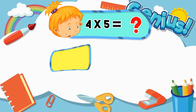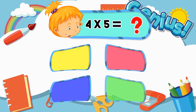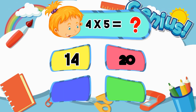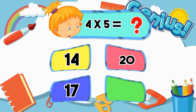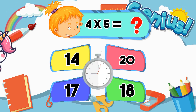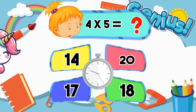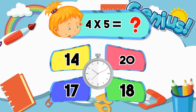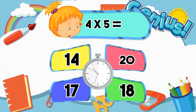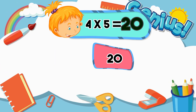What is four times five? Options: Fourteen, Twenty, Seventeen, Eighteen. Answer: Twenty.